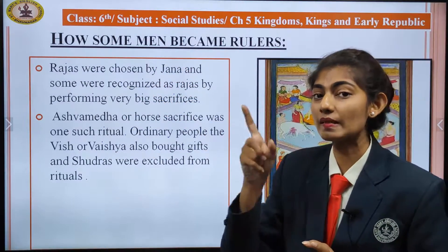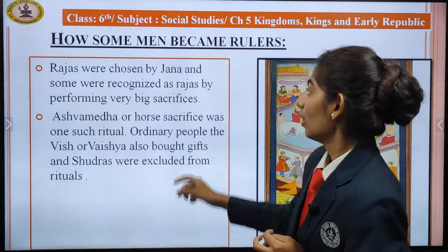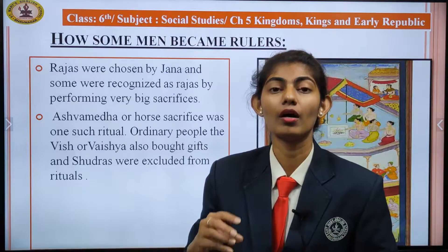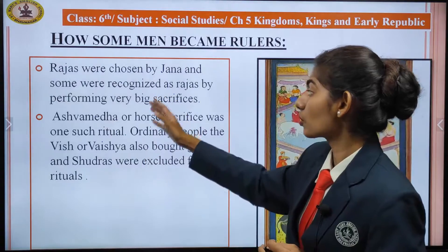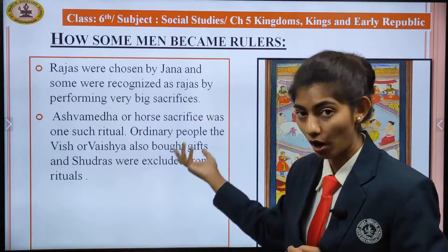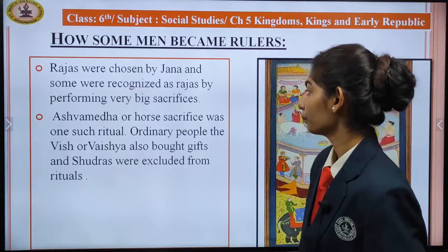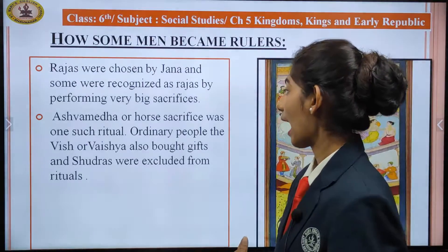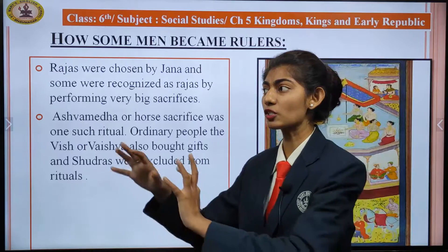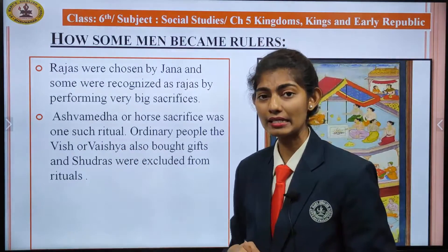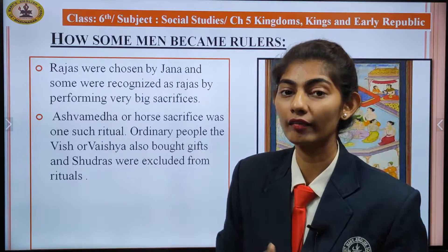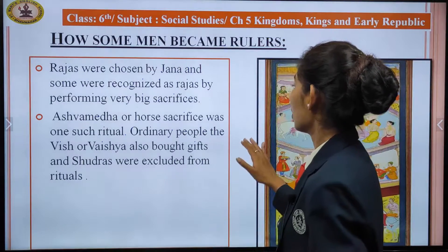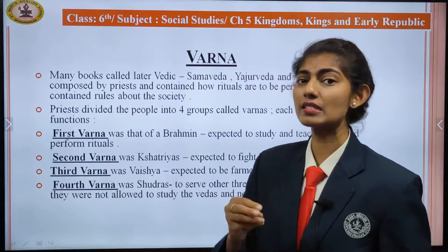Rajas were chosen by the jana. Some were recognized as rajas by performing very big sacrifices. The Ashwamedha, or horse sacrifice, was one such ritual at that time. Ordinary people — the Vish or Vaishyas — also brought gifts. Shudras were excluded from the rituals and were considered common people; they were not allowed to perform rituals. This is how some men became rulers.